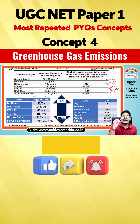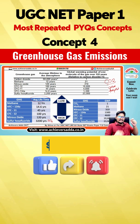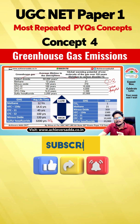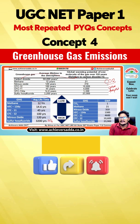These gases have an average lifetime. Global warming potential means how much potentiality each greenhouse gas has to cause global warming when compared with carbon dioxide. Carbon dioxide has a value of 1, and methane has 21 times the global warming potential of carbon dioxide.